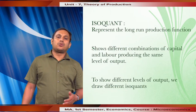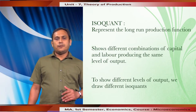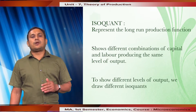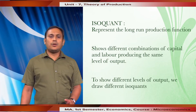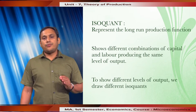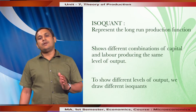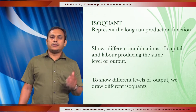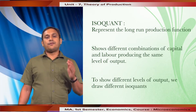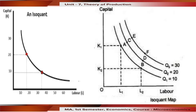Next, we will discuss about isoquant. To represent the long run production function graphically, we use the technique of isoquant. The isoquant is a curve which shows different combinations of capital and labor producing the same level of output. To show different levels of output we draw different isoquants, and that is represented by an isoquant map. Figure 1 shows an isoquant representing different combinations of capital and labor, and Figure 2 shows an isoquant map containing different isoquants representing different levels of output.